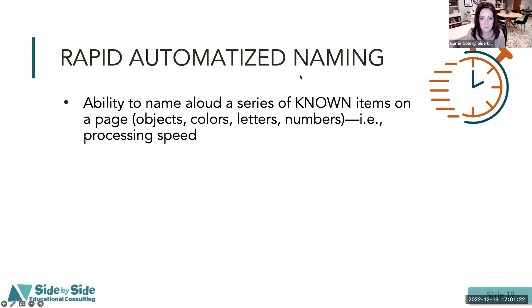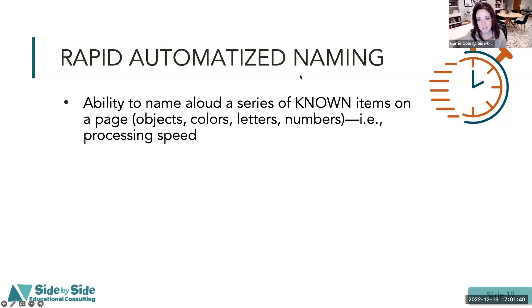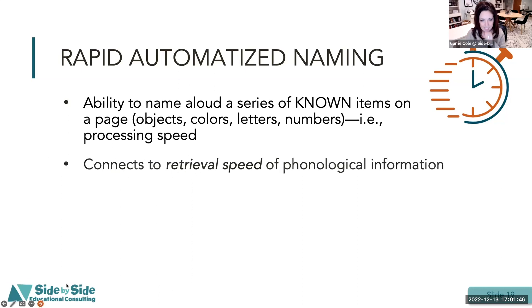When they test this with students, they look at very simple things, because they want to make sure it's something the student already knows. What they're testing is not whether they know it — it's how quickly they can recall it. It might be pictures of things like ball, chair, car. How quickly can they name those? That's why it's called rapid automatized naming — it's really assessing processing speed. It connects to retrieval speed of phonological information.